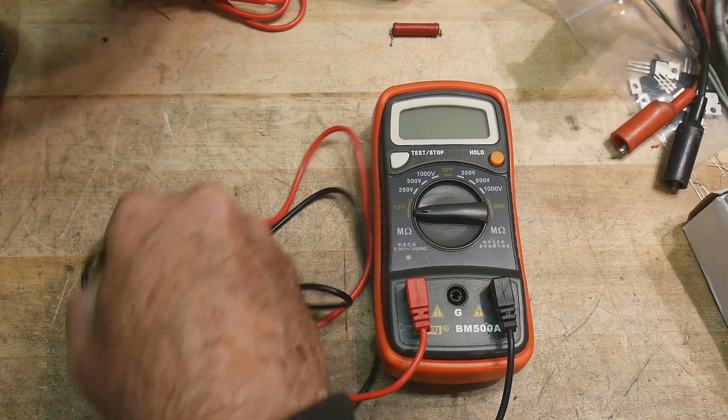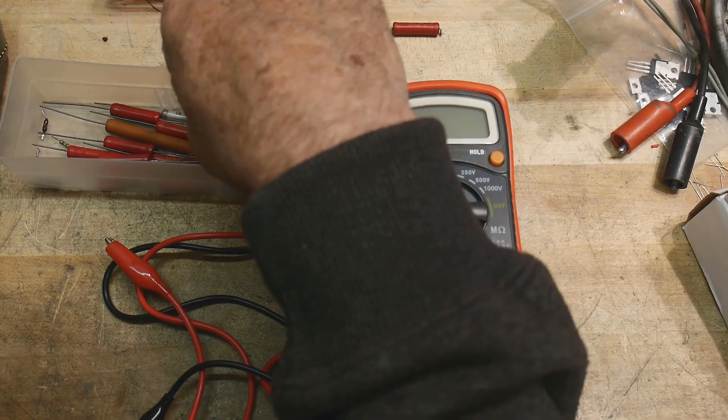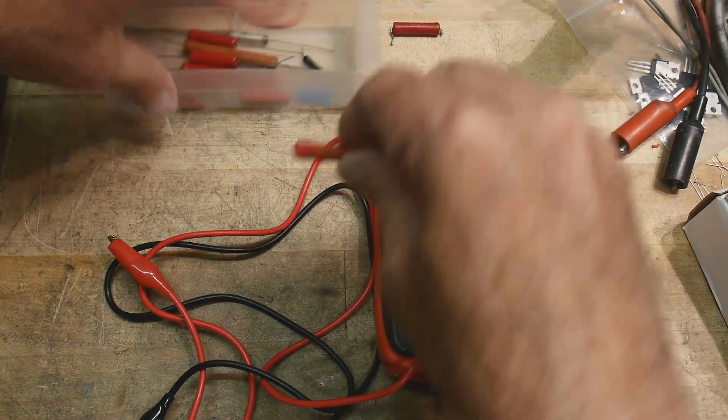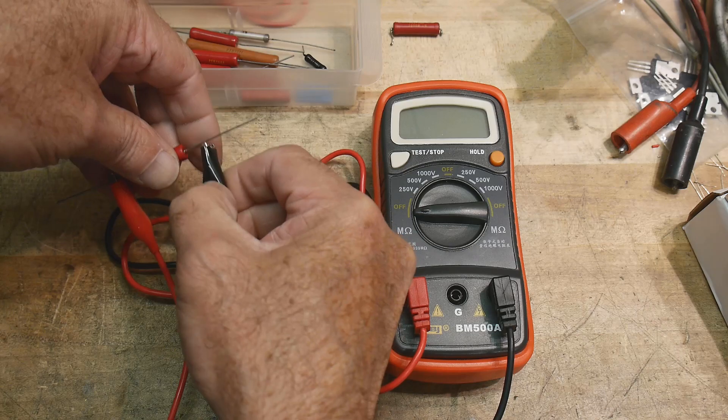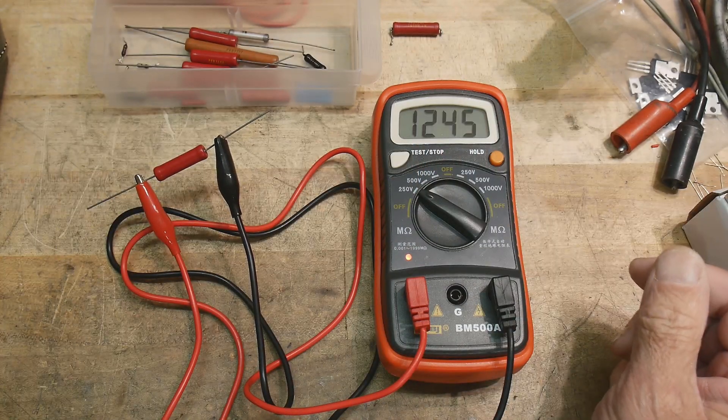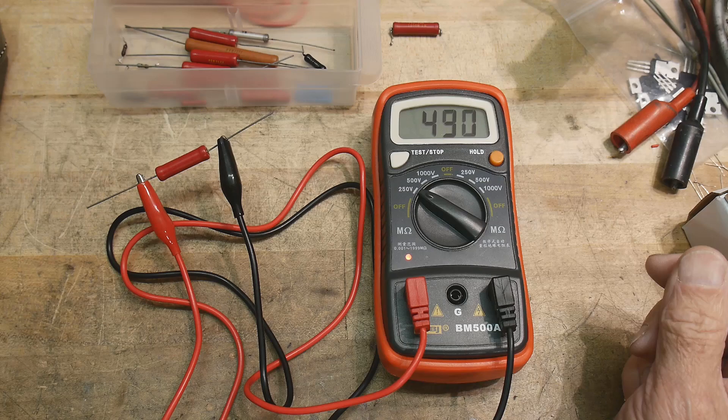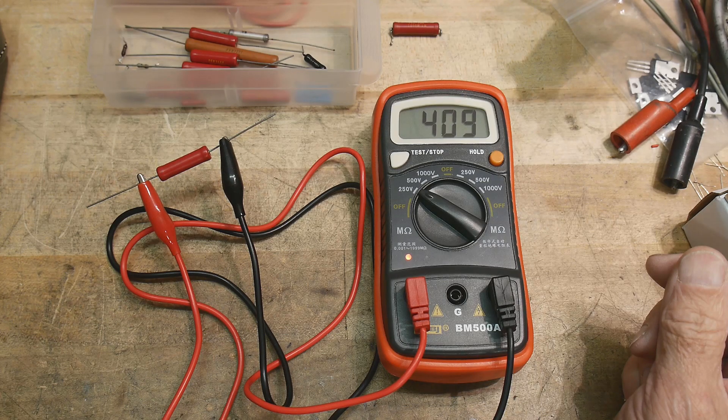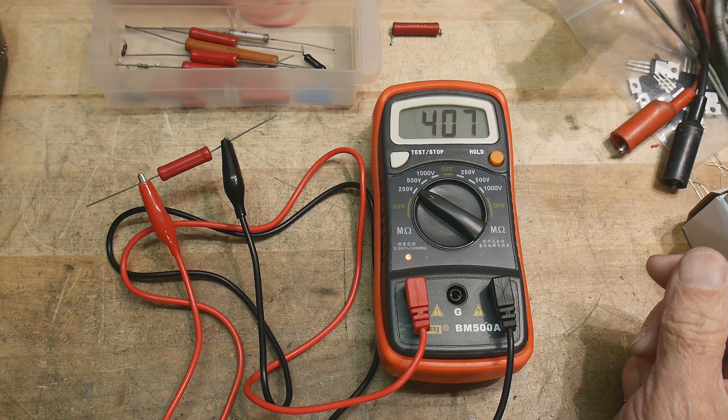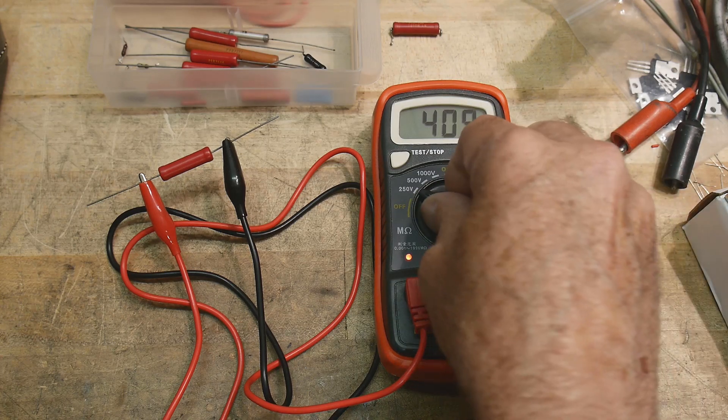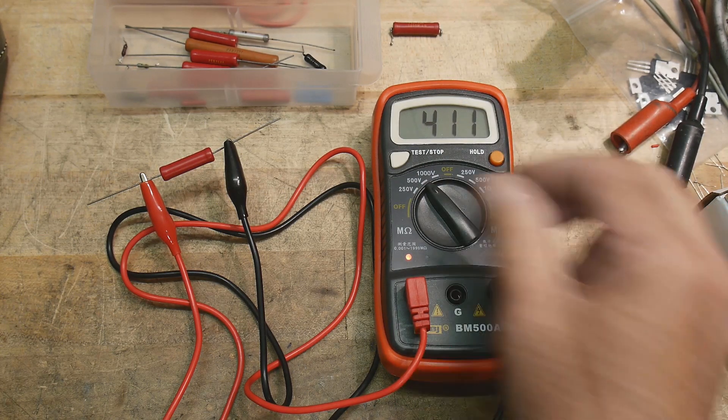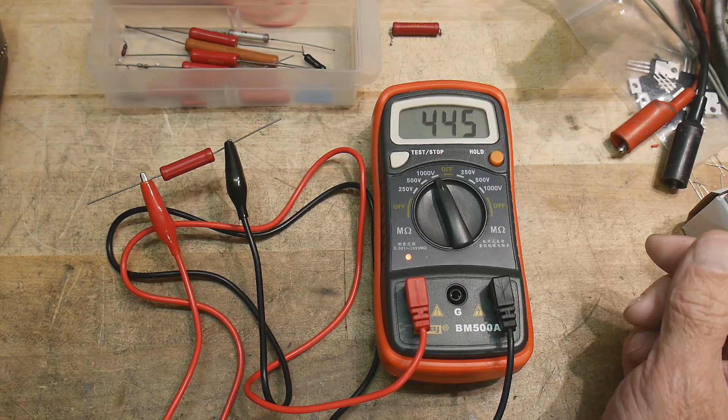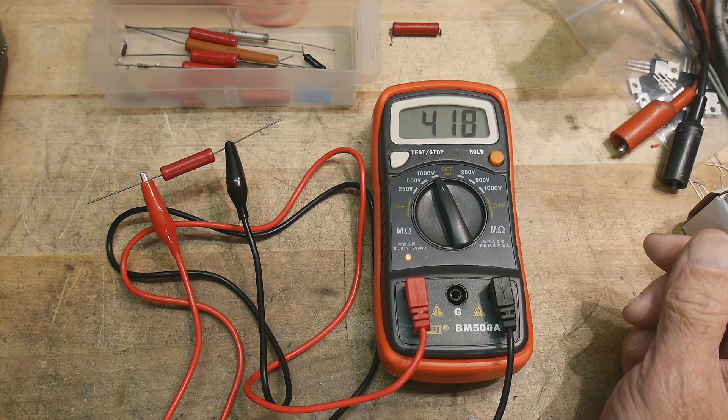Let's grab another resistor out of the box. Here's 400 meg ohms. Let's do 400. There we go 400 at 500 volts and a thousand volts, 400 meg ohms. It's doing 400 meg ohms cool.